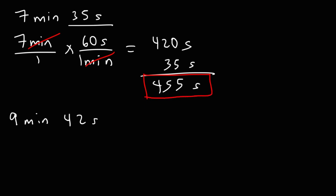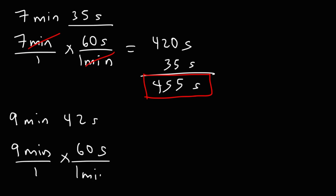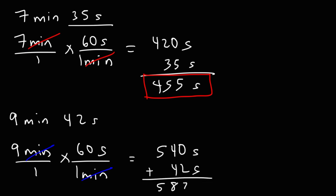As you can see, these problems are not too difficult — they're doable. Now let's try the next one. We have 9 minutes and we're going to multiply by 60 seconds per minute. 9 times 6 is 54, add a 0, so 9 times 60 is 540. Then let's add 42 seconds to it, which gives us 582 seconds. That is the answer.